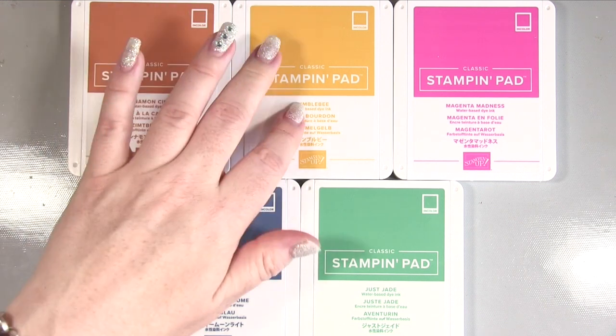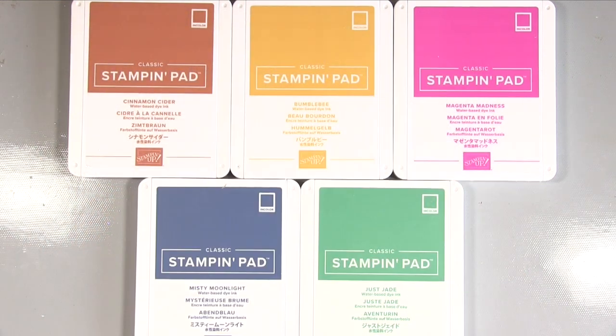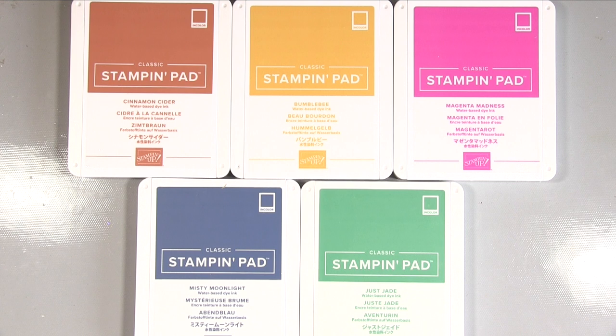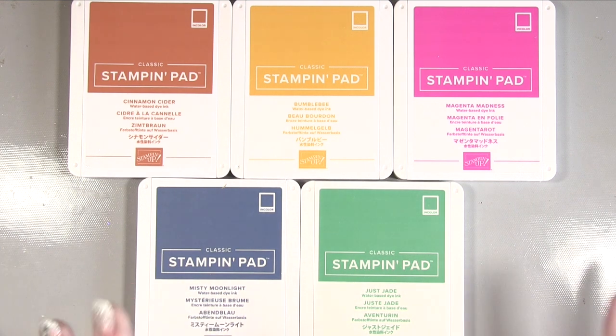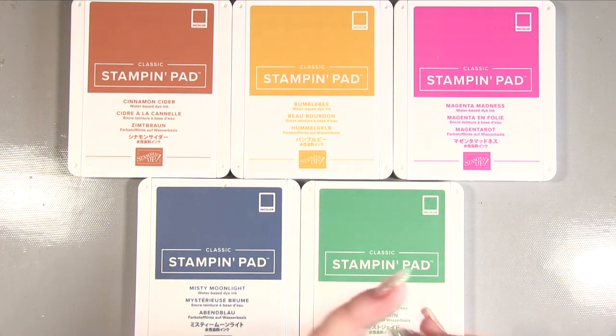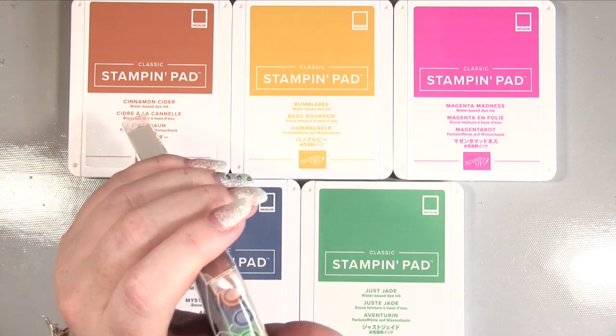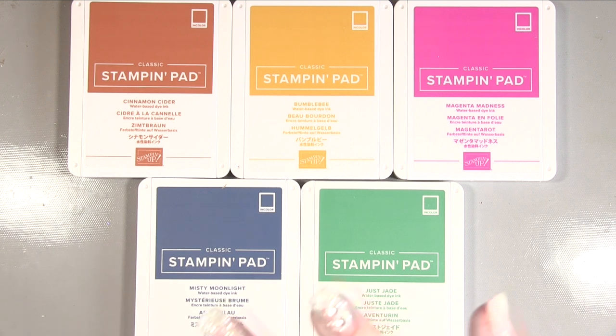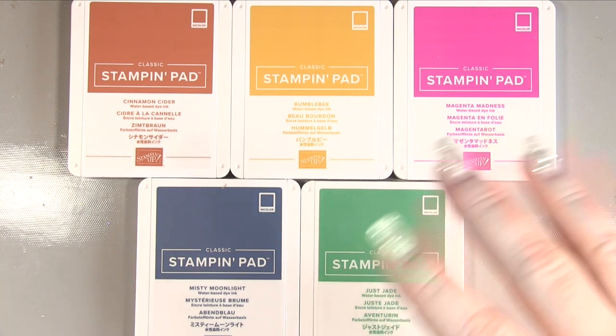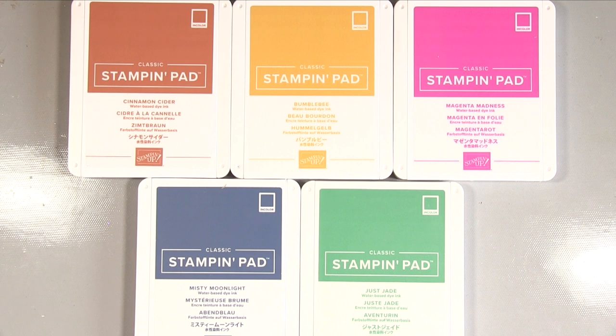So let me just tell you what we've got. We've got Cinnamon Cider, Bumblebee, Magenta Madness, Just Jade and Misty Moonlight. Now I will do a sampling of these colours in due course but let me just show you what else I have in this range because Stampin' Up do the colours that match across the board. There will be ribbons and all sorts as well.